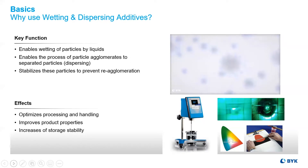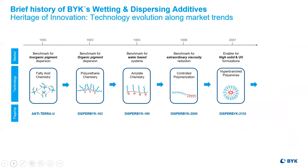In other modules, we highlight certain chemistries. Today, we're going to focus on polyurethane additives that were actually developed during a time in the coatings industry when the increased usage of organic pigments required improved wetting and better color development. The industry also saw a move away from lead and chrome-based pigments. Sophisticated resin systems and grinding mechanisms were also evolving, so it's no wonder we look to polyurethanes to meet those needs.